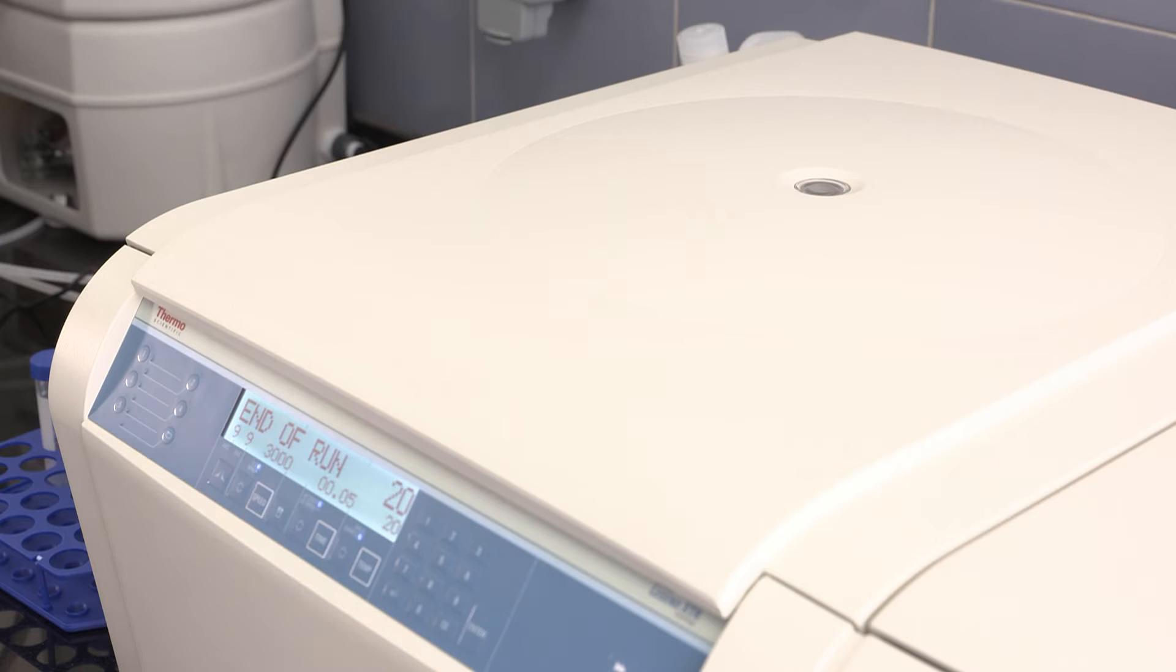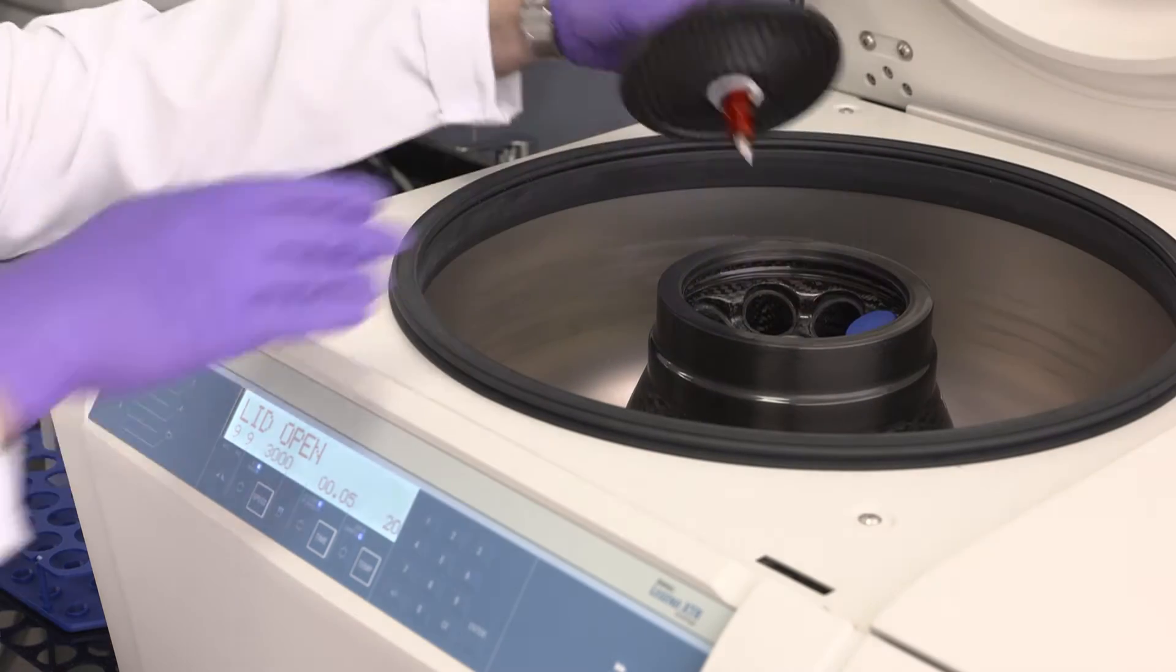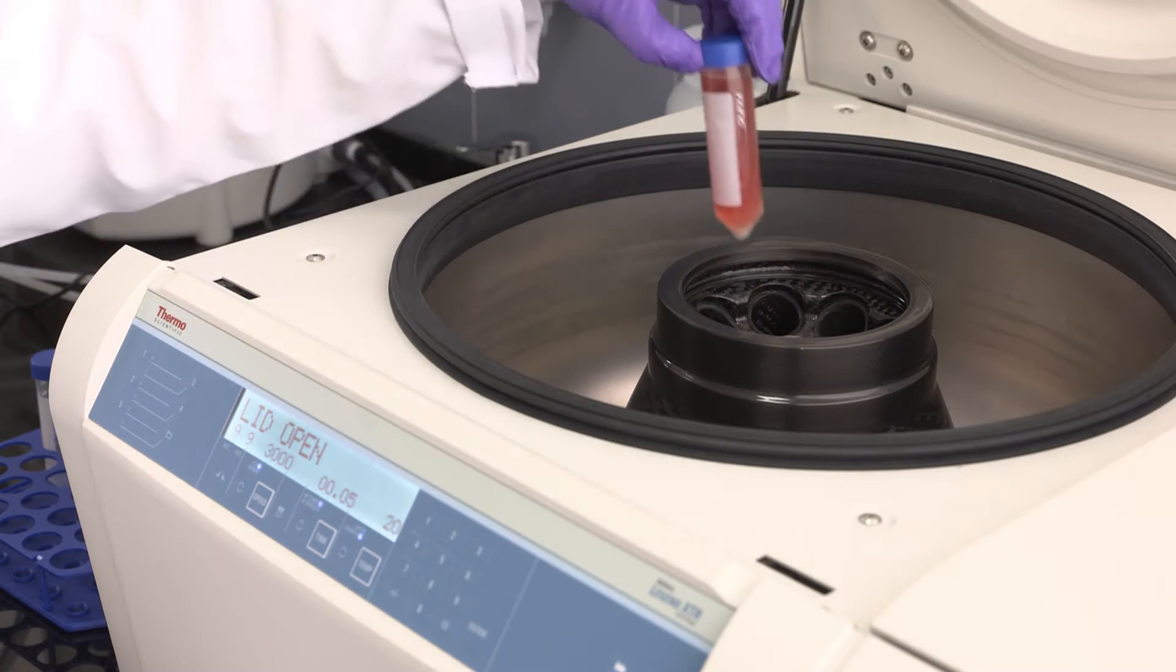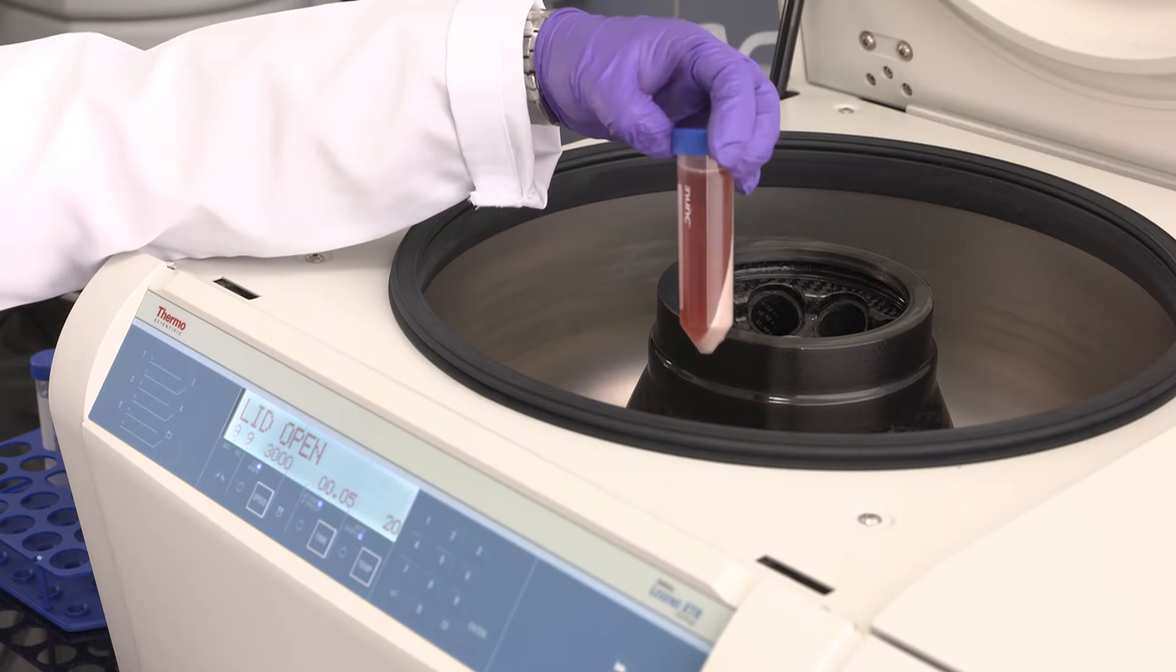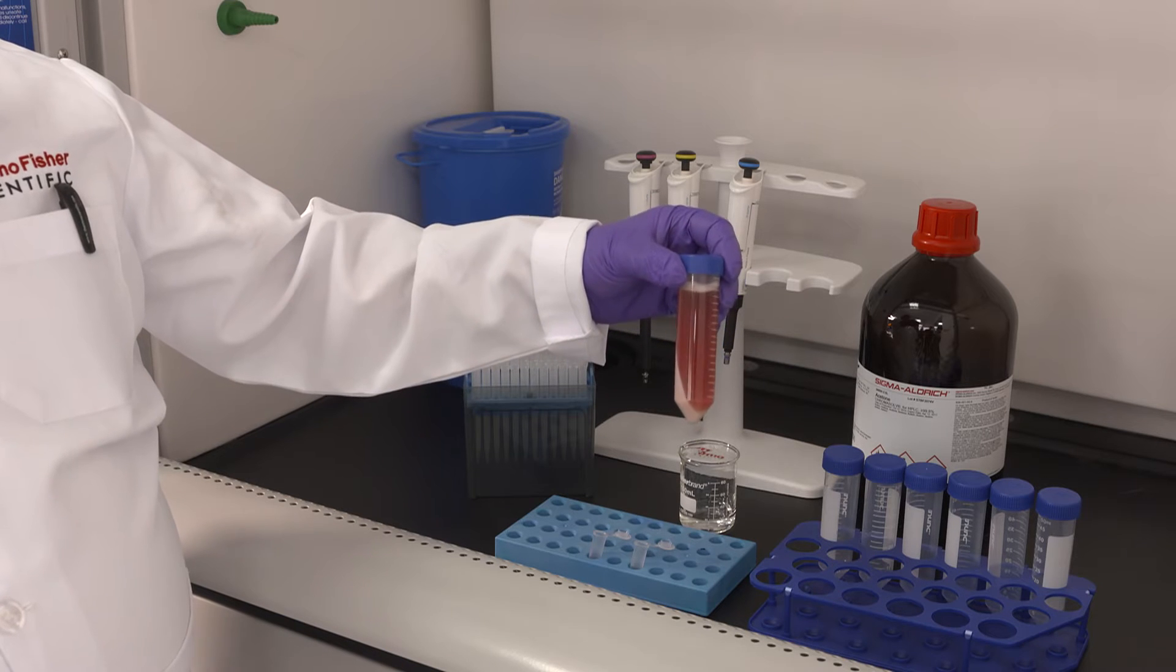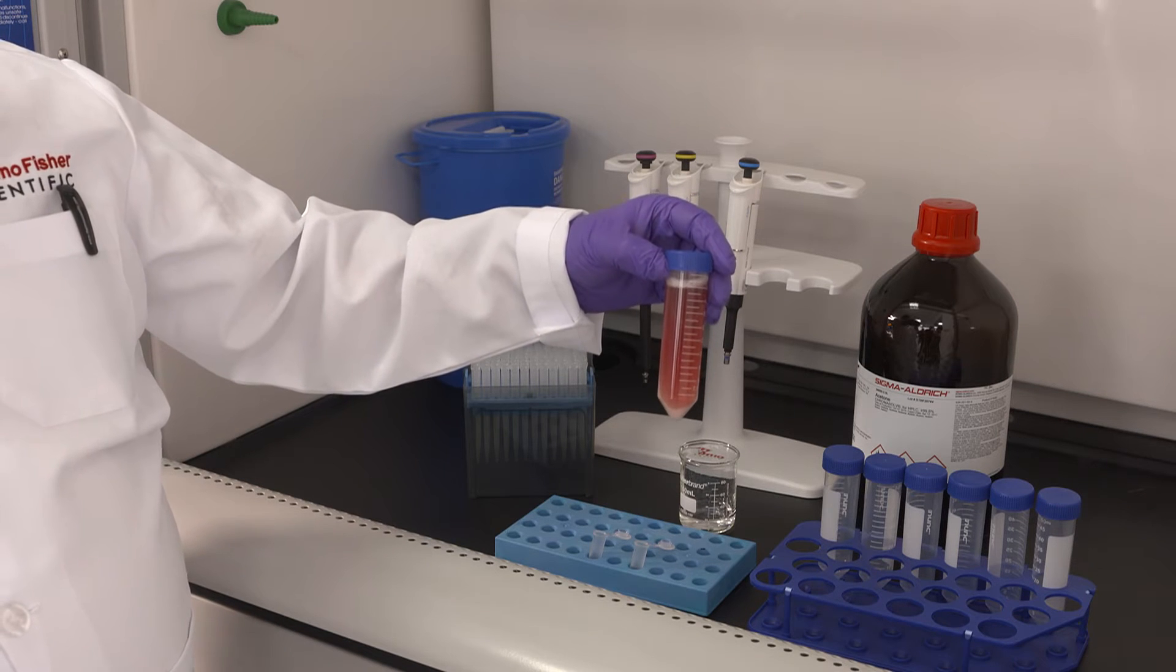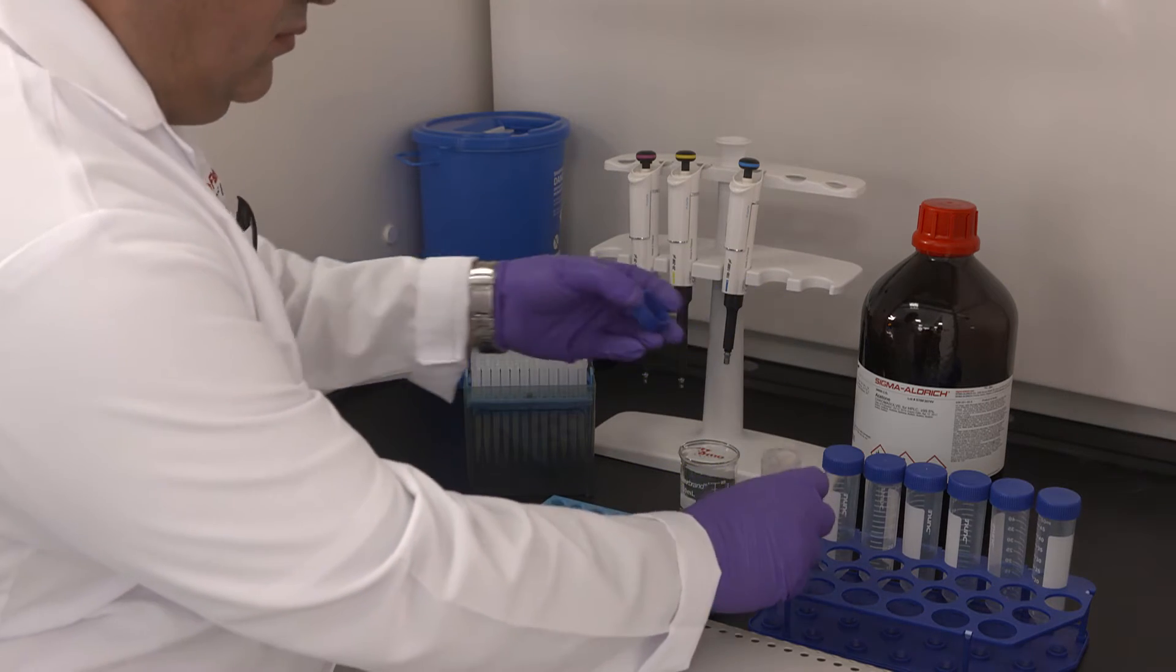The centrifuge is finished. We can see the debris on the side and at the bottom of the tube. Following the centrifugation, the debris are concentrated at the side and the bottom of the tube. At this point, we'll take 500 microliters of the supernatant and transfer it into a microcentrifuge tube.